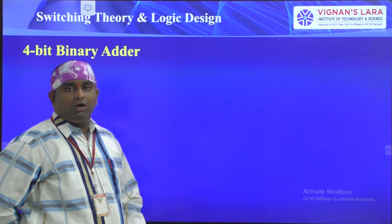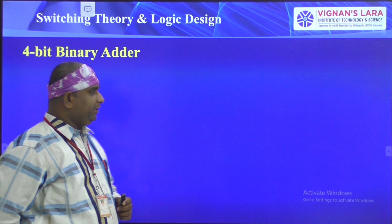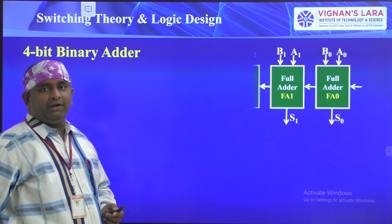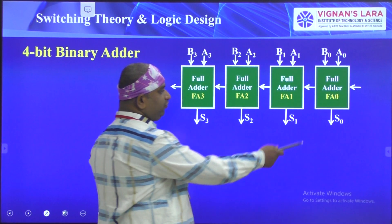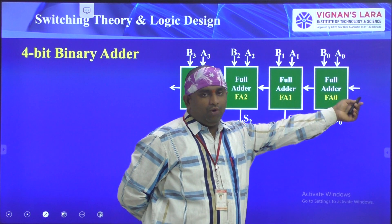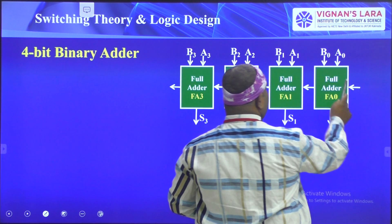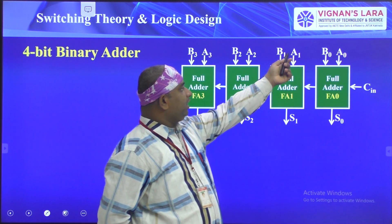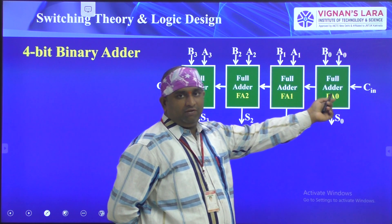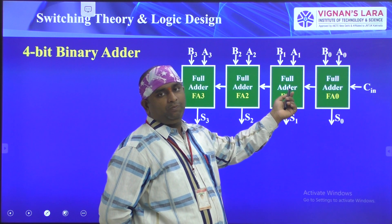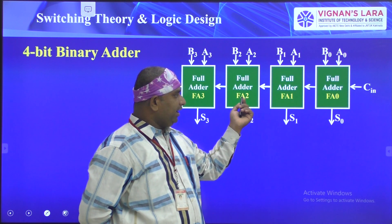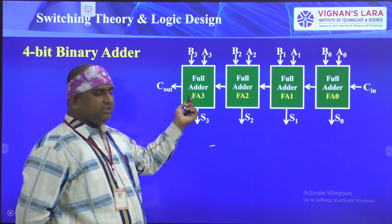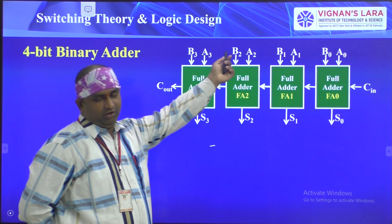Let us see the logic diagram implementation for the BCD addition operation. For implementing a 4-bit binary addition, we need four full adders. For each full adder we have inputs a and b, plus a carry input — so three inputs total. The carry output of each full adder becomes the carry input for the next full adder, chaining a0b0 through a3b3.